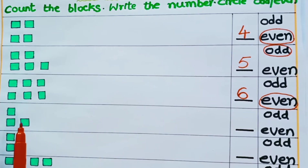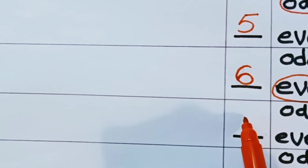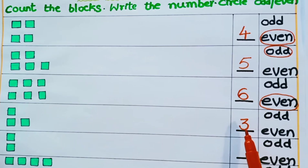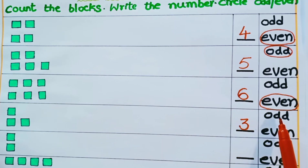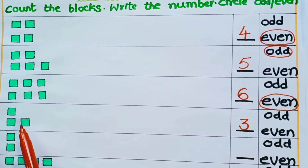Now children look at the next row. How many blocks are there? 1, 2, 3. There are 3 blocks. Is 3 an odd number or even number? It is an odd number. Why? Because it has 1 unpaired block. So when there is an unpaired block it is an odd number. Now let us circle odd.